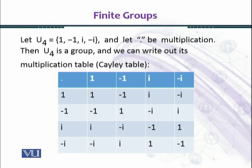Similarly, (-1)×1=-1, iota×1=iota, (-iota)×1=-iota. Now, (-1)×(-1)=1, (-1)×iota=-iota, (-1)×(-iota)=iota. iota×(-1)=-iota, iota×iota=-1, iota×(-iota)=1.